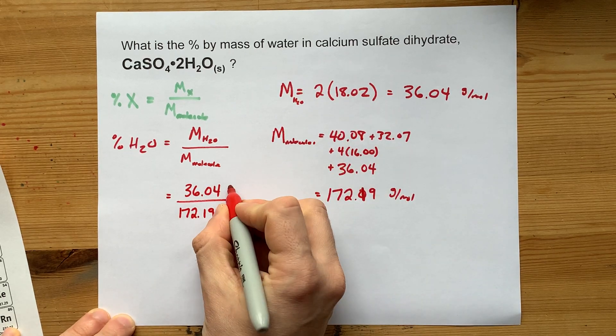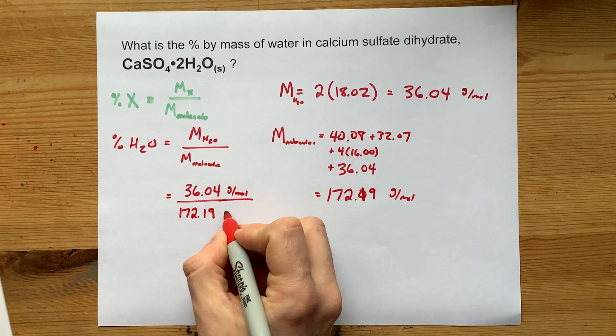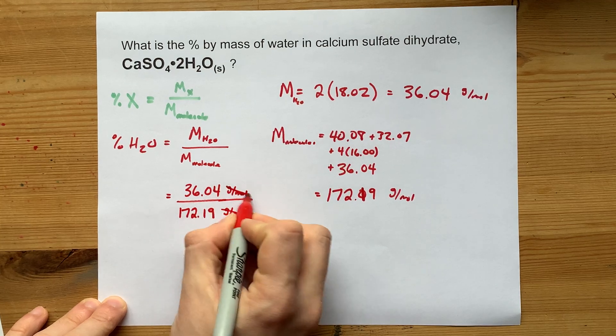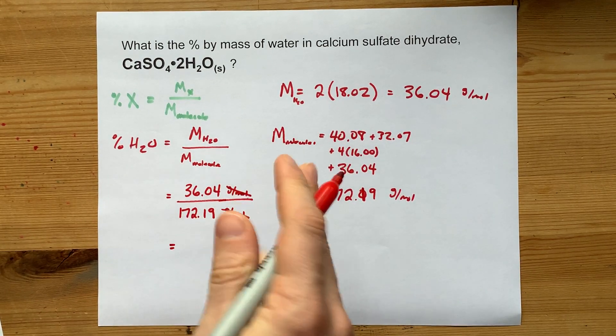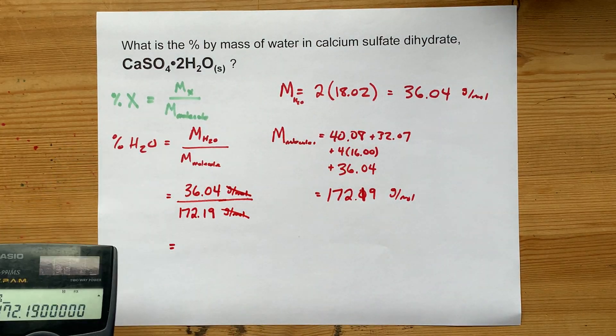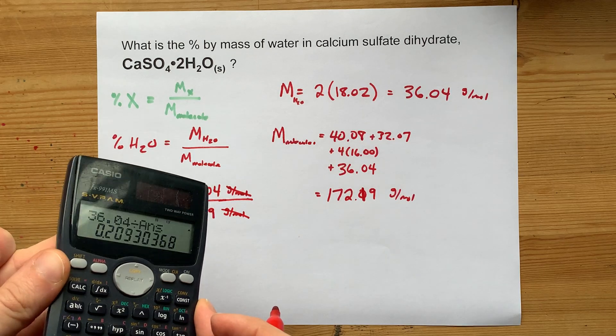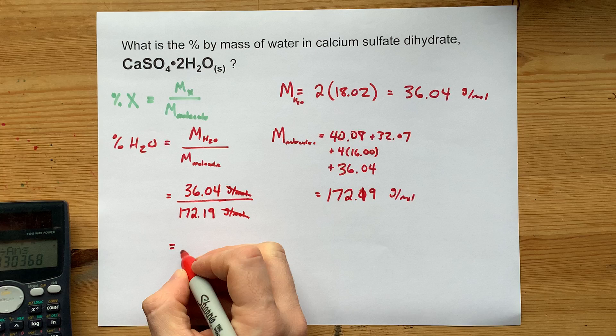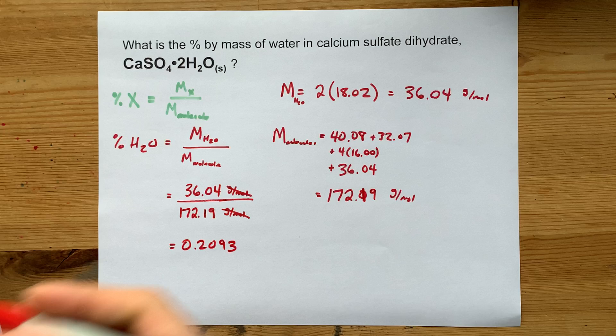Now, if you're pedantic about units, or rather, if your teacher's pedantic about units, you can put these both down as grams per mole, but they cancel out because they're the same unit when you divide, and you end up with just a fraction. 36.04 divided by that answer gives me 0.2093. So, it's 20.93%.